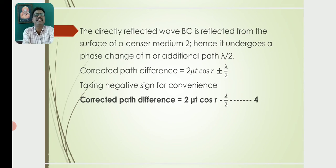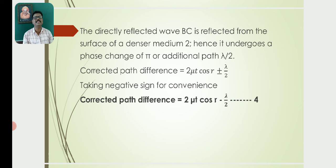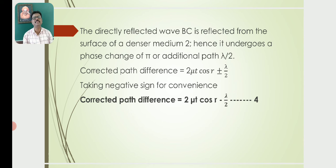The directly reflected ray BC is reflected from the surface of a denser medium, so it undergoes a phase change of π, equivalent to an additional path of λ/2. Therefore, the corrected path difference = 2μT cos R ± λ/2. Taking the negative sign for convenience, the corrected path difference = 2μT cos R − λ/2. This is equation (4).